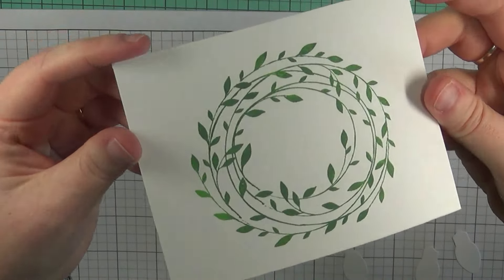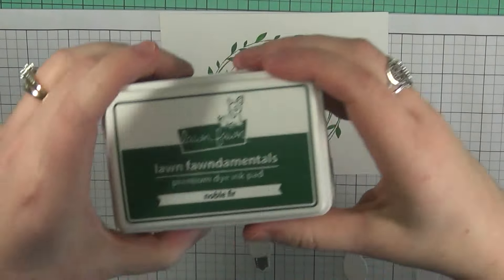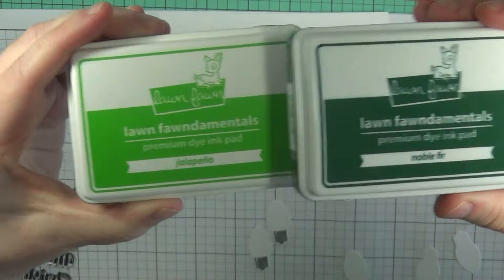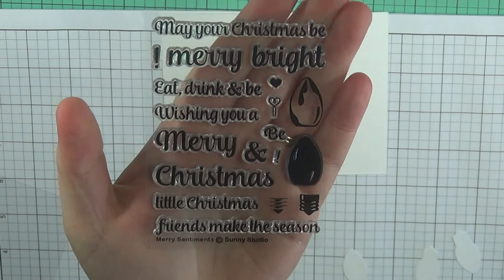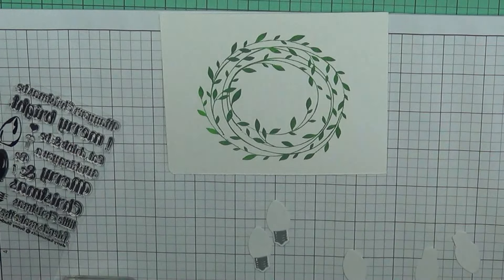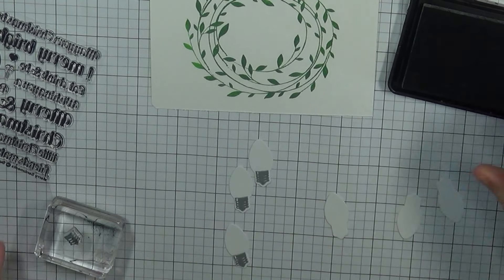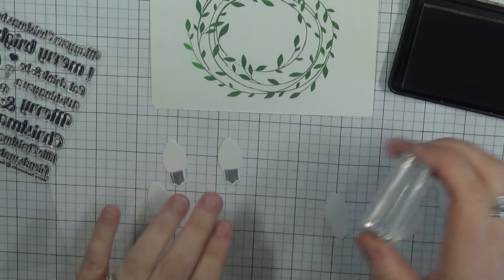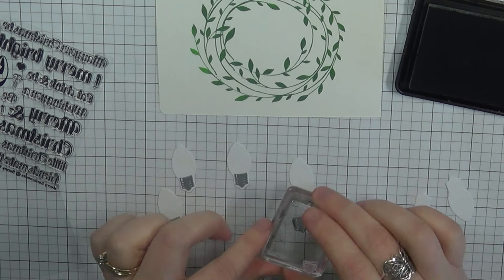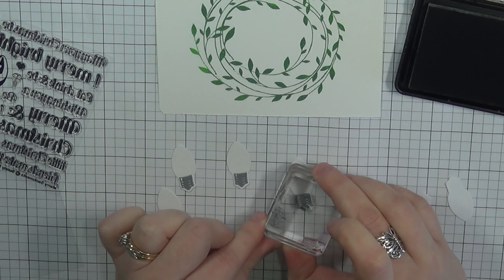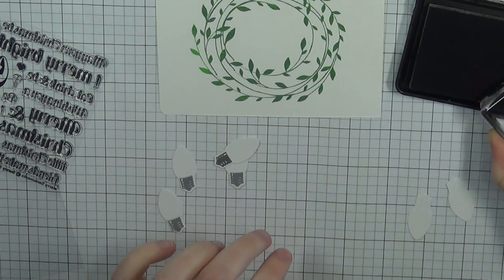Today we're going to be making this card here. I'm going to be using this Hero Arts stamp set that you see already stamped out. I apologize that I went ahead and stamped out some of my images. I thought I had record on my camera and I did not. So as soon as I noticed I hit that record button and I'm going to continue on with my card here.